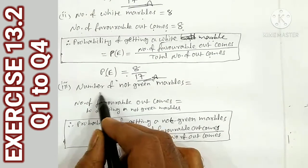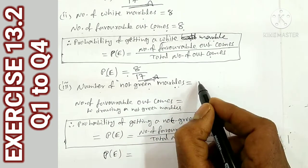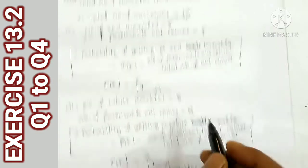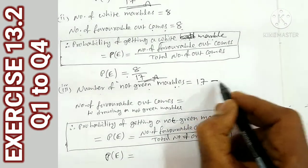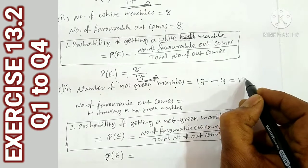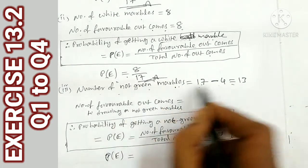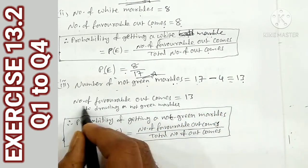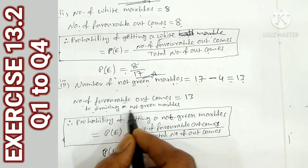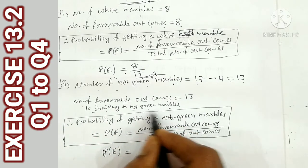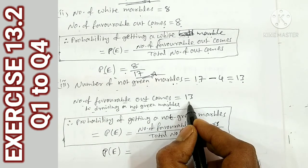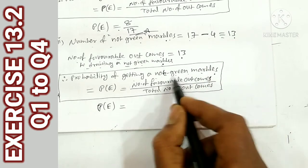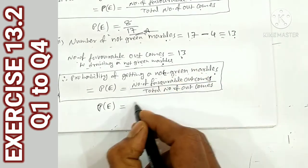Next, the number of not green balls: total balls 17, green balls 4. So 17 minus 4 = 13. So 13 is the count of not green balls. The favorable outcome is 13. The probability of getting not a green marble = 13/17.